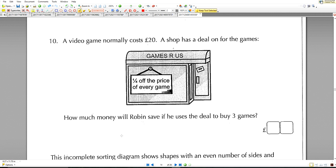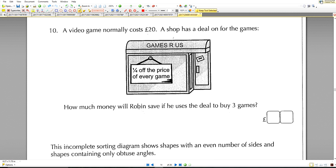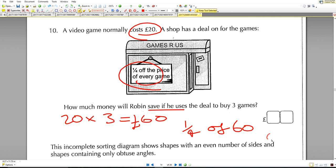A video game normally costs 20 pounds. A shop has a deal on for the games: a quarter off the price of every game. How much will Robin save if he uses the deal to buy three games? There's 20 pounds a game times by 3, which gives you 60 pounds in total. You're going to be saving a quarter of the game price. A quarter of 60 means 60 divided by the denominator, the bottom number, times it by the numerator, which is the top number. That'll give you 15 pounds.